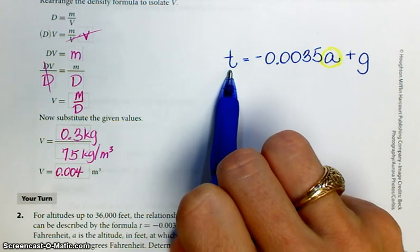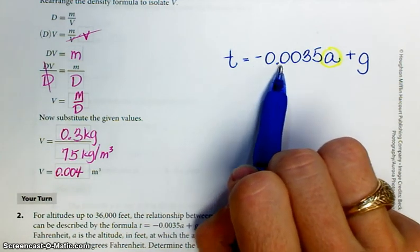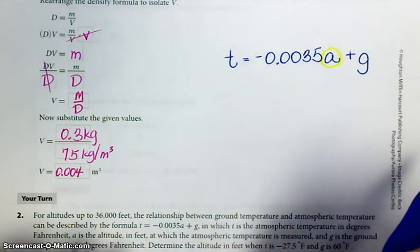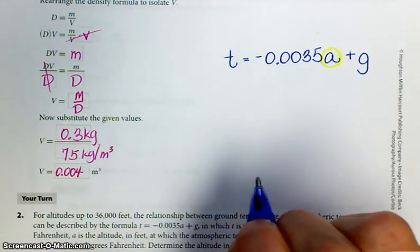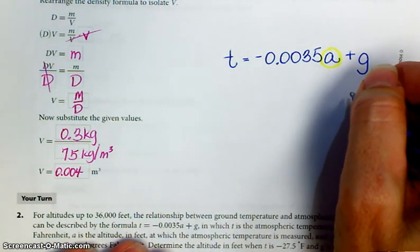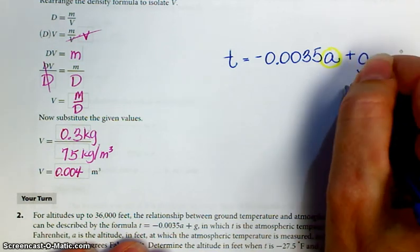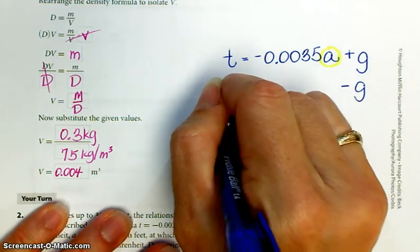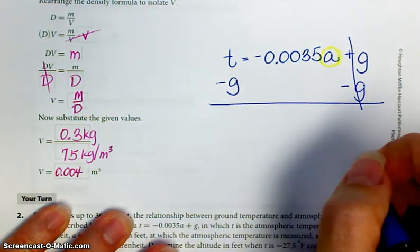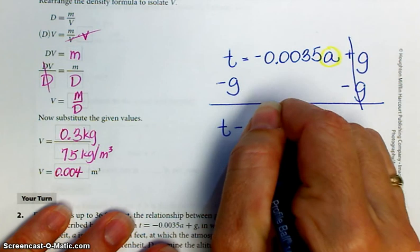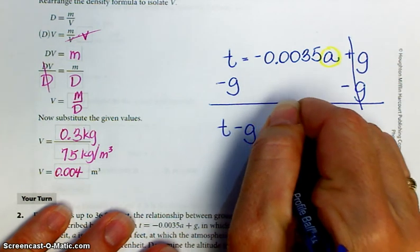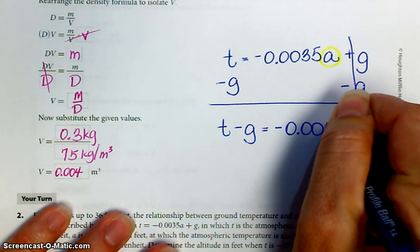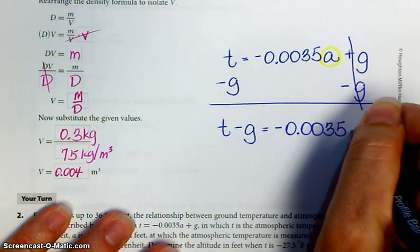All right. I'm going to remind you that you have three different terms in this equation. You have T on this side of the equal sign. You have a negative 0.0035A, and you have a G. So we need to move all of the terms without the variable that we want. So in order to do that, this currently says plus G. I'm going to subtract G to this side, subtract G on that side. After one step,